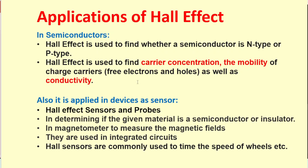So what are the basic applications of Hall effect? In semiconductors, the Hall effect is used to find whether a semiconductor is N type or P type. And it is used to find the carrier concentration, the mobility of charge carriers, as well as the conductivity of the material. Also, it is applied in different devices as a sensor, and it determines whether a material is semiconductor or insulator. Also in magnetometers, it is used to measure the magnetic fields. They are used in integrated circuits and electronic devices. And they are also used in the measurement of the speed of wheels.